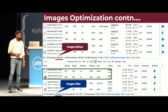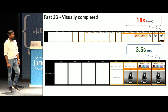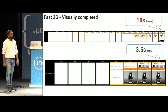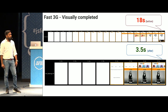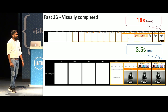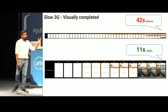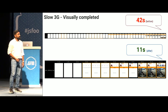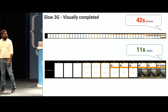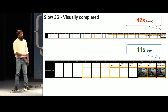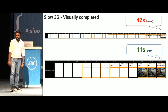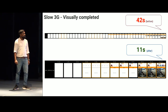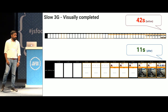These are the results. In fast 3G, we went from 18 seconds to close to 3.5 seconds after all optimizations. In slow 3G, the difference is 3x faster: from 42 seconds — where no user would continue or come back — down to 11 seconds. We still have scope to optimize, and we're still working on it. Performance is not a one-time task; it's a continuous process.